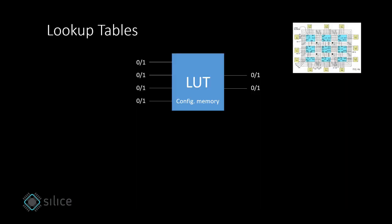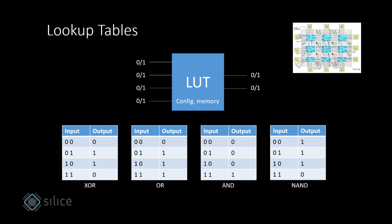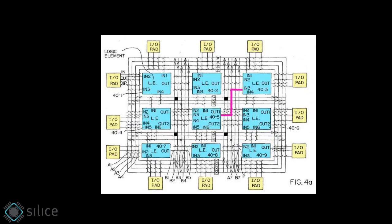Each logic cell is in fact a small lookup table, a small memory that you can configure to describe what should be the output of the cell given its inputs. This lets you emulate any logical gates such as XOR, OR, AND, or NAND. By connecting these elementary cells together, you can describe any digital circuit you want. And of course, these connections are made at the intersections of the network of electrical traces surrounding the cells.